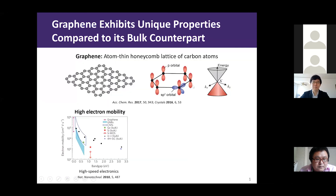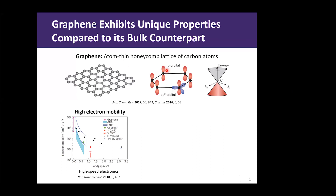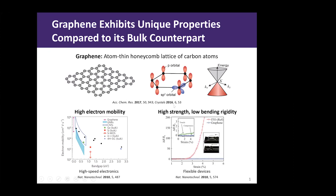To get us all on the same page, let me start by introducing some background on graphene in the context of electronics. Graphene is a single layer of carbon atoms arranged into a honeycomb lattice. Different from graphite, where sheets of carbon lattices are bonded by van der Waals forces, graphene has a free pi electron for each carbon atom and exhibits an electron mobility about two orders of magnitude higher than graphite and two to three orders of magnitude higher than silicon, which constructs most of today's electronic devices.